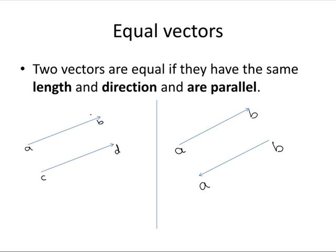So here we have the vector AB and the vector CD. AB and CD have equal length. They're both pointing in the same direction and they're parallel.